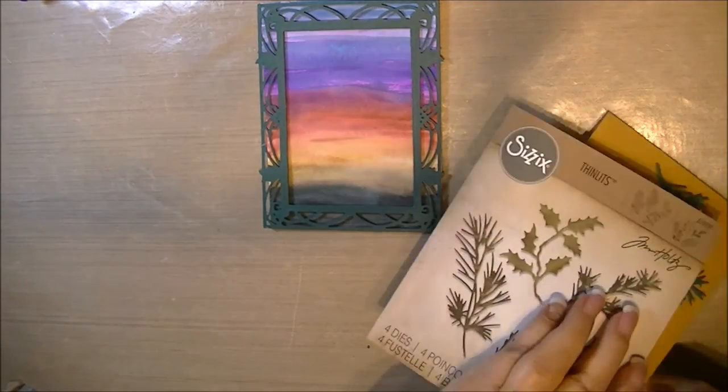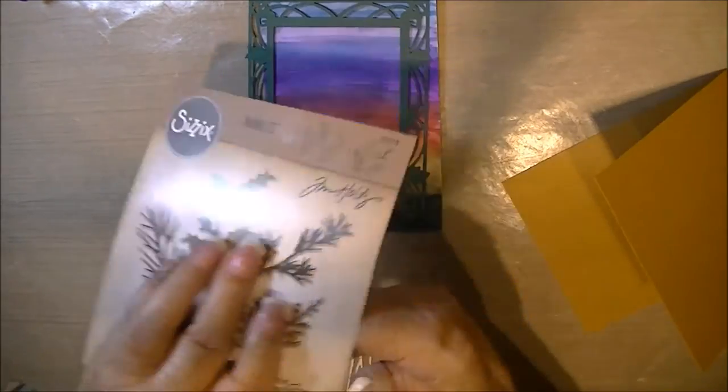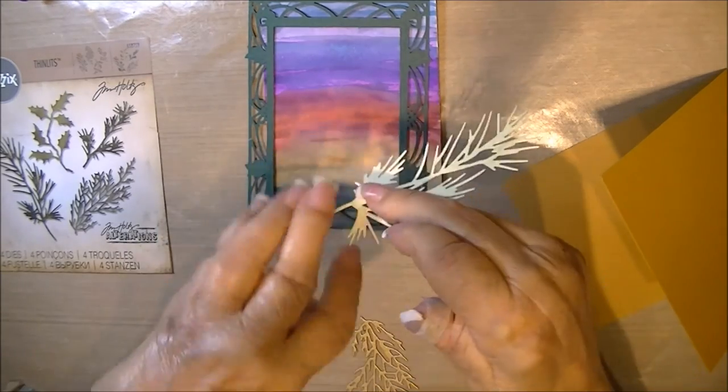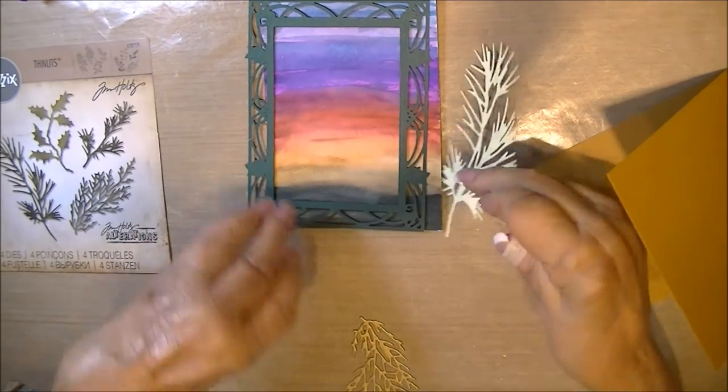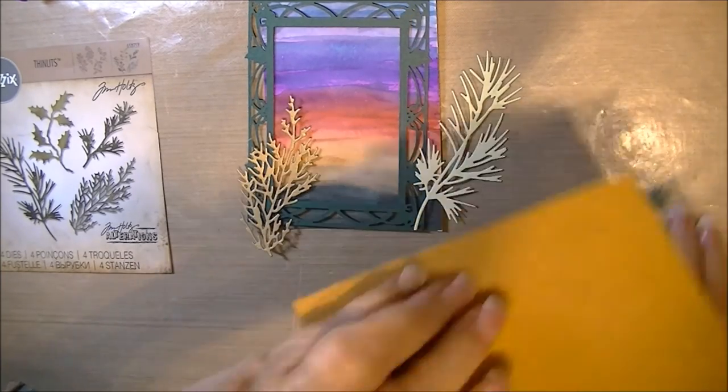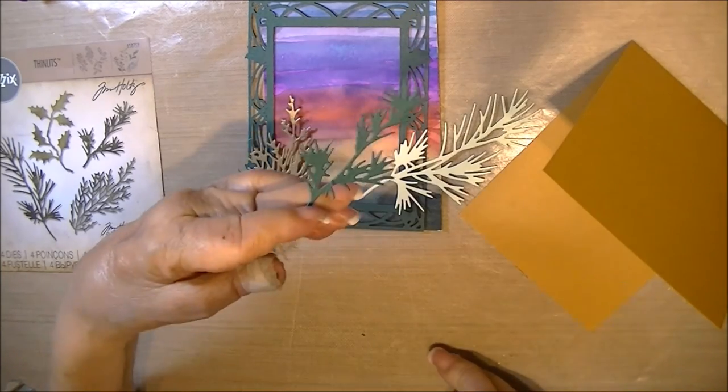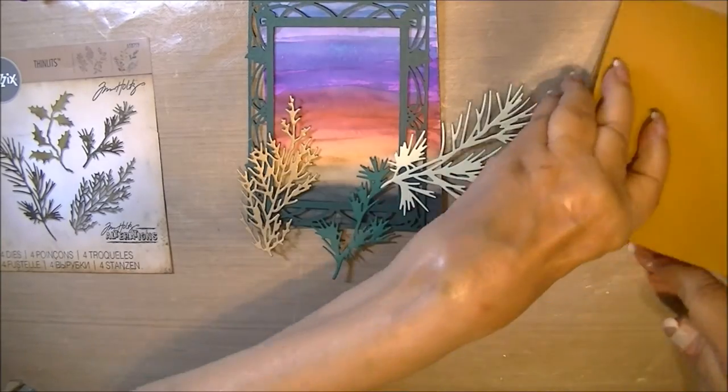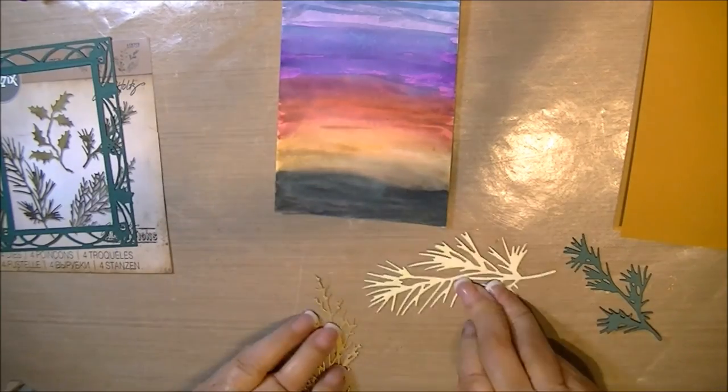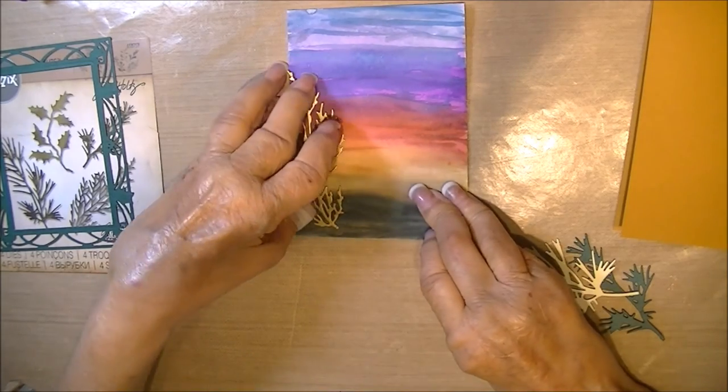And this is the six holiday dies from Tim Holtz. And for one of them, it's green on one side. It's a designer paper scrap. The other one is out of gold shimmer sheet. And then just green. So I cut three pieces of foliage there, of the holiday greens.